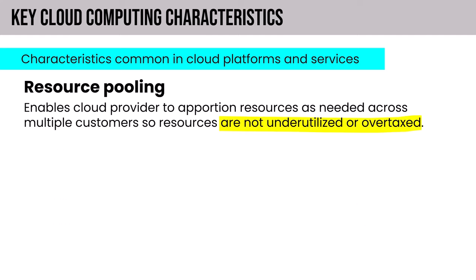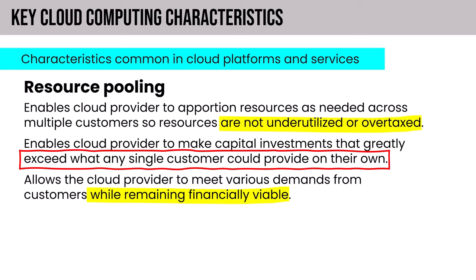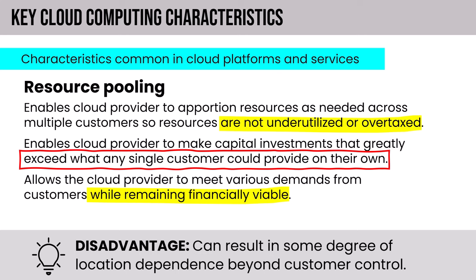Scalability is more about deploying the necessary capacity for steady-state operations day-to-day, while elasticity is adding that burst capability when we have sudden increases in traffic. Resource pooling enables the cloud provider to apportion resources as needed across multiple customers so resources are neither underutilized nor overtaxed. This enables the provider to make capital investments that greatly exceed what any single customer could provide on their own, and to meet demands from multiple customers while remaining profitable.